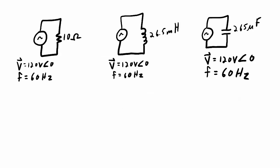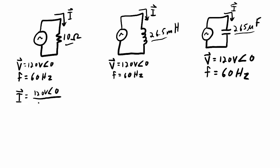I have three simple examples, all using a 120 volt, 60 Hz sine wave voltage source applied across a 10 ohm resistor, a 26.5 millihenry inductor, and a 265 microfarad capacitor. For the resistor, the current is voltage divided by impedance: the impedance is 10 ohms at a phase angle of 0 degrees. Dividing the phasors gives 120 volts over 10 ohms = 12 amps, with a phase angle of 0 minus 0 = 0 degrees.